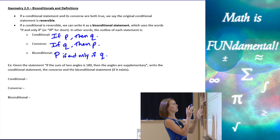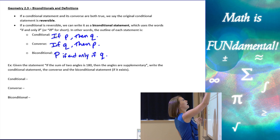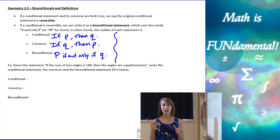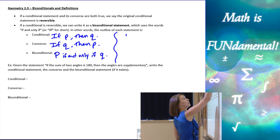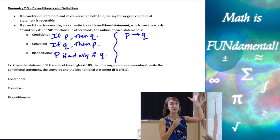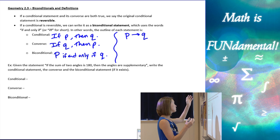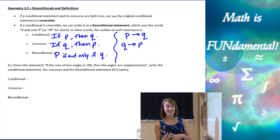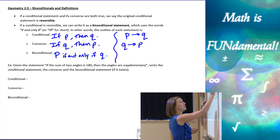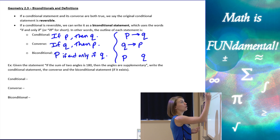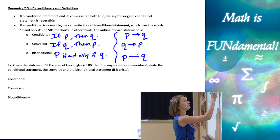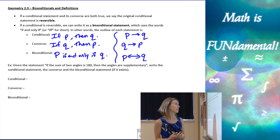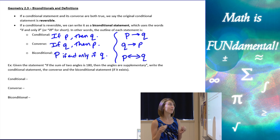Let's look symbolically at what these are. We're going to use arrow symbols to denote our statements. Our conditional statement would be P → Q: if P is true, it implies Q is true. The converse is Q → P: if Q is true, then P is also true. Our biconditional goes both directions — P to Q — but instead of going one way, we can go both ways, and we use a double arrow to denote that. So the symbol for biconditional is that double arrow: P ↔ Q.